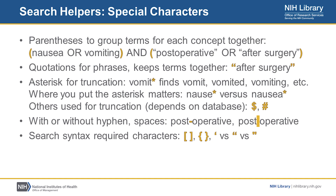There are also quotation marks that you might use for phrases, to keep terms together. And then there's an asterisk that you can use for truncation — so you don't have to think of all the variations of a term, for example: vomit, vomited, vomiting. You can use truncation to capture all of those things in one term. Depending on the database, you may have other special characters that can be used for truncation, and some databases even allow for truncation in different parts of the word. You may also want to consider with or without a hyphen, or using spaces instead of a hyphen, possibly in combination with quotation marks — and those could be straight versus curly quotation marks.